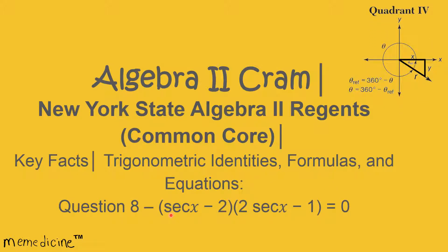Question 8: The secant of x minus 2 times 2 the secant of x minus 1 is equivalent to 0.